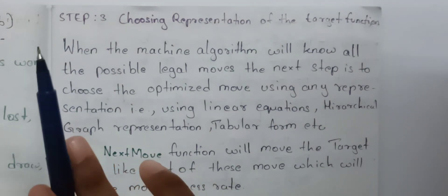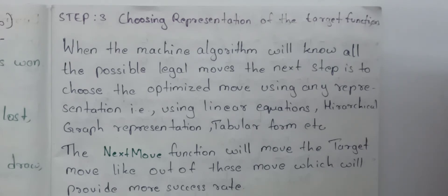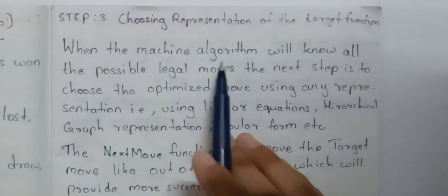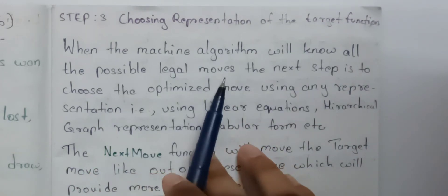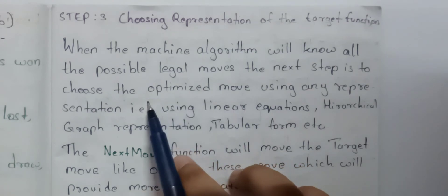We need to select the next move. We need to choose a move with the help of the target function. When the machine learning algorithm knows all the possible legal moves, the next step is to choose the optimized move.